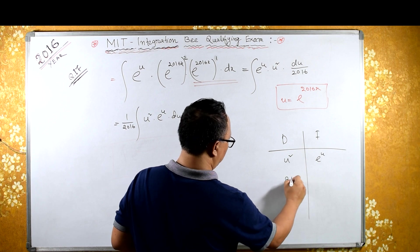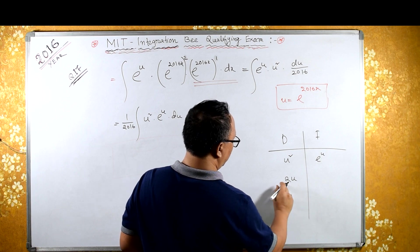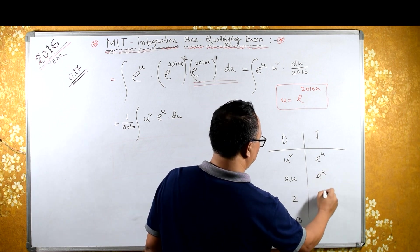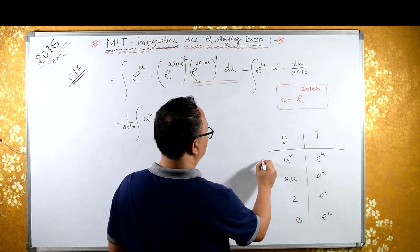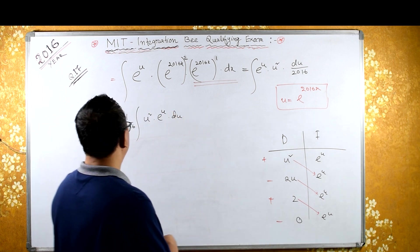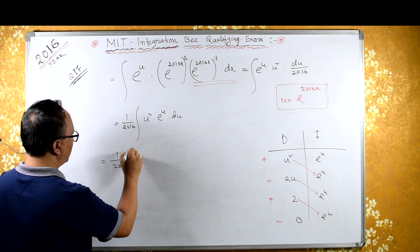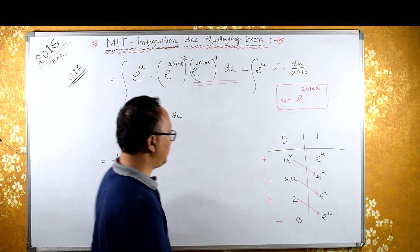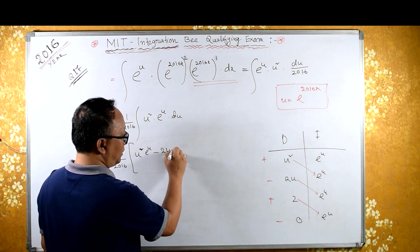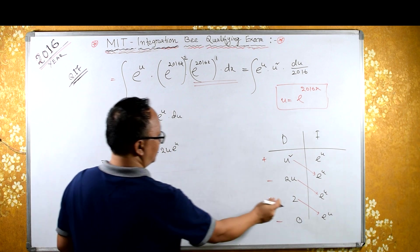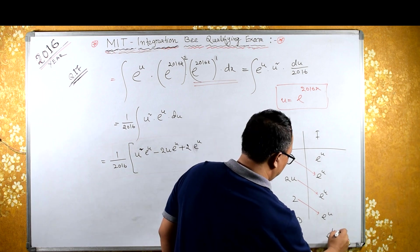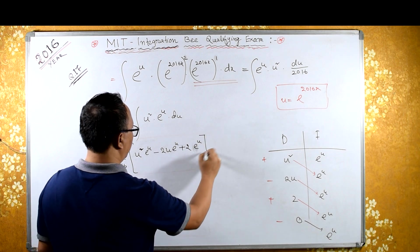Differentiation of u squared is 2u, differentiation of 2u is 2, and differentiation of 2 (constant) is 0. Integration of e raised to u stays the same throughout. Using the DI method with plus, minus, plus, minus signs, multiplying diagonally: u squared into e raised to u, minus 2u into e raised to u, plus 2 into e raised to u. Since the next differentiation term is 0, we stop here, plus some constant.